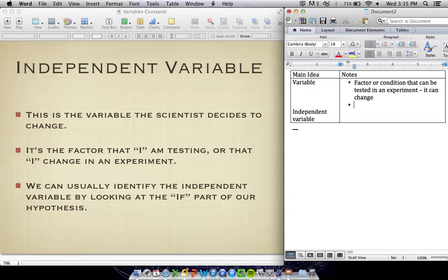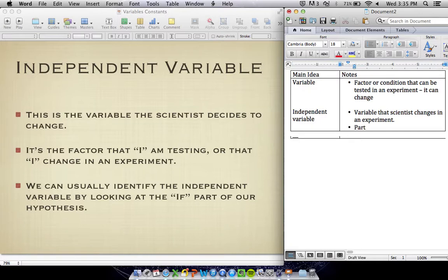An independent variable is the variable or the factor that the scientist changes in an experiment. The way I remember it, it's the part of the experiment that I am testing. Independent starts with an I, and it is the part of the experiment that I am testing.